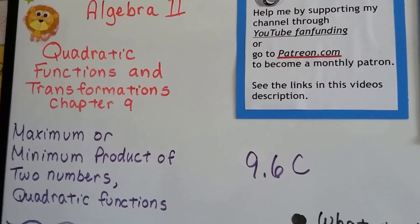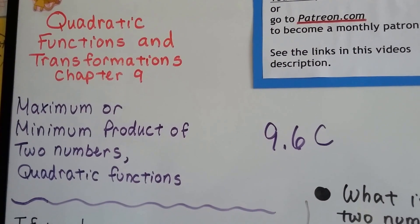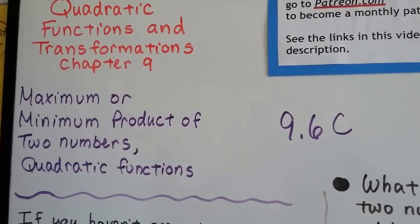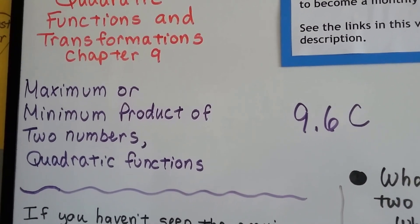We're in Algebra 2 now at 9.6c, and we're going to talk about the maximum or minimum product of two numbers, their sum or difference, for quadratic functions.